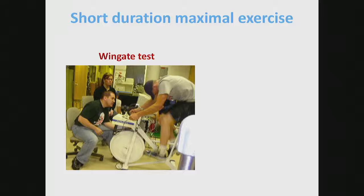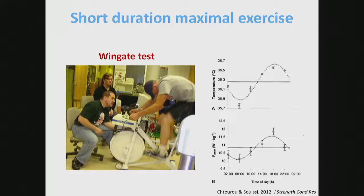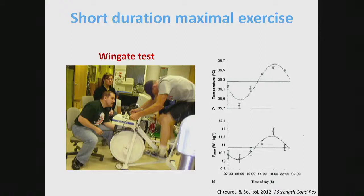They do the Wingate test at different times of the day. Looking at this graph, the power output is normalized to the person's weight, plotted against time of day - 2 in the morning, 6 in the morning, 10 in the morning, 2 in the afternoon, 6 in the afternoon, and 10 at night. They've fitted a sinusoidal curve, and it shows quite beautifully that performance is pretty poor in the morning. Performance is at its best at that 6 o'clock period. That's an example of how physical performance changes over a 24-hour period.